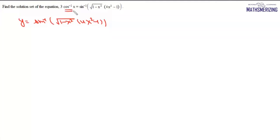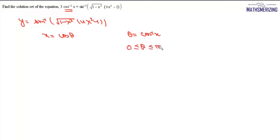Since we need the result in terms of cos⁻¹(x) and there is a √(1 - x²) term, we choose x = cos θ, so θ = cos⁻¹(x). The principal value range of cos⁻¹ is [0, π], so θ ∈ [0, π]. Substituting x = cos θ, we get y = sin⁻¹(√(1 - cos²θ) · (4cos²θ - 1)) = sin⁻¹(sin θ · (4cos²θ - 1)).